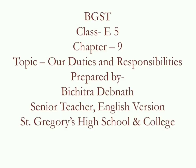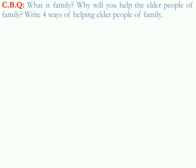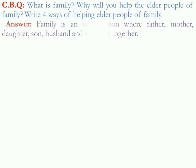Okay boys, so let's start today's session. The first CBQ is: What is family? Why will you help the elder people of family? Write four ways of helping elder people of family. Let us start the answer. Family is an organization where father, mother, daughter, son, husband and wife stay together. There are so many organizations in a state; family is the smallest one, and it is based on its members.